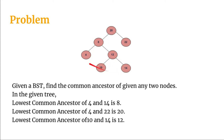Likewise, for nodes 4 and 22, the common ancestor will be 20, and for nodes 10 and 14, the common ancestor will be 12.